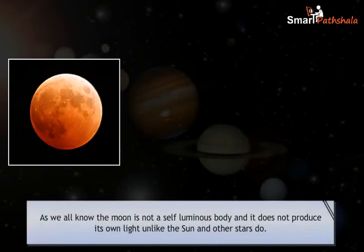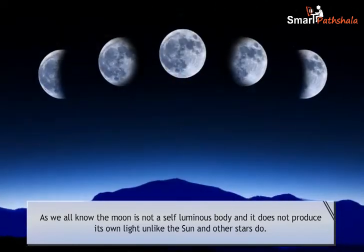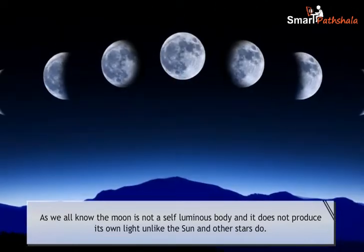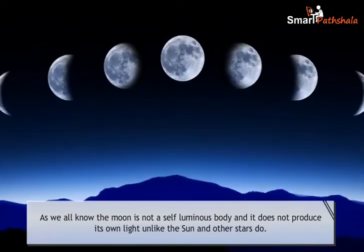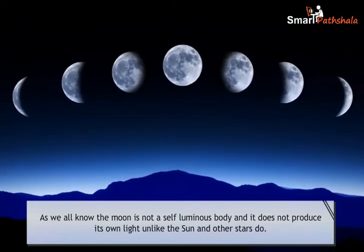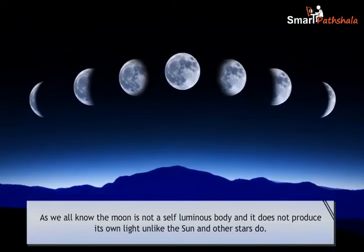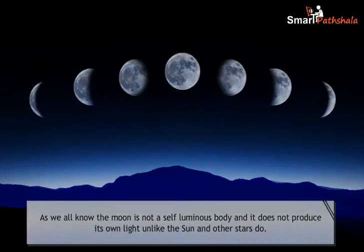As we all know, the moon is not a self-luminous body and it does not produce its own light, unlike the sun and other stars. We see the moon because of the reflection of the sunlight falling on it towards the earth. Therefore, we can see only that part of the moon from which the light of the sun is reflected towards the earth.